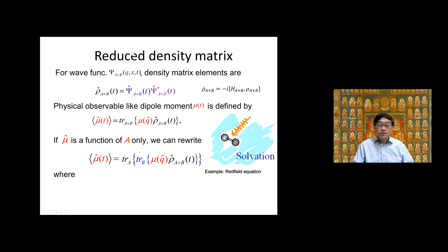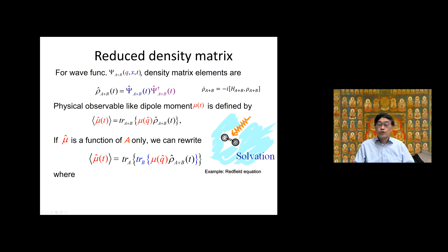We need to carefully treat this kind of system. We have to use the so-called reduced density matrix. Instead of the wave function, we use the density matrix. The total wave function covers both the system and heat bath coordinates. The equation of motion for this density matrix is the quantum Liouville equation, equivalent to the Schrödinger equation. For example, if you want to measure the dipole — say a dipolar molecule in a non-polar solvent — when you shine a laser, you only observe those molecules.